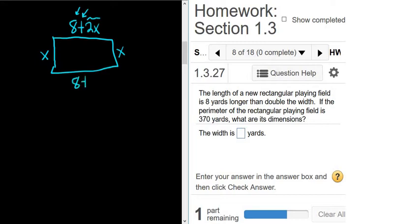Likewise, this is 8 plus 2x. We're told that the perimeter is 370 yards. So the perimeter is the sum of the lengths of the sides. So if you add up all these sides, we should get 370. So if we do x plus x plus 8 plus 2x plus 8 plus 2x, that should be equal to 370.